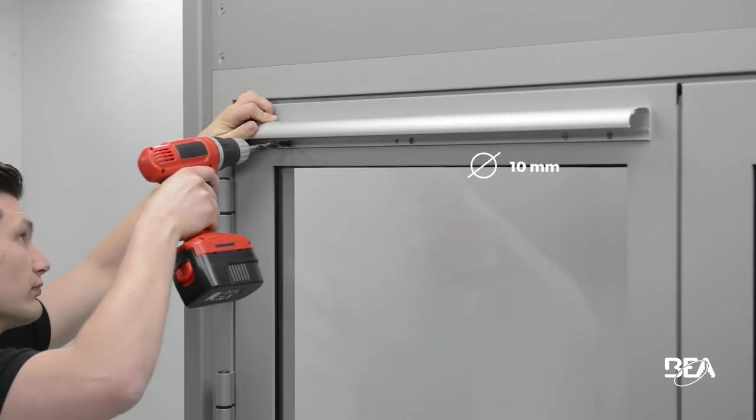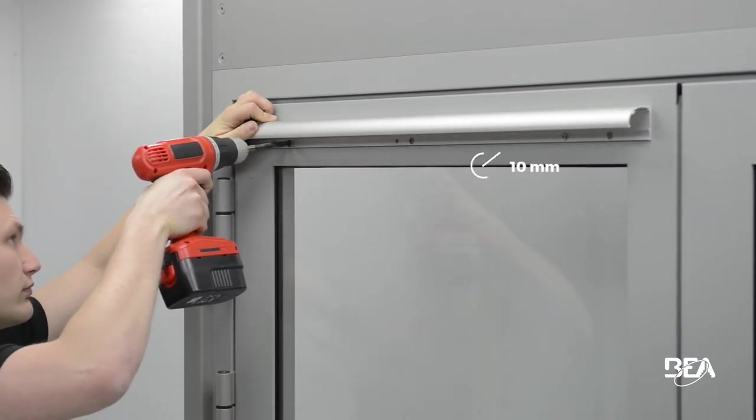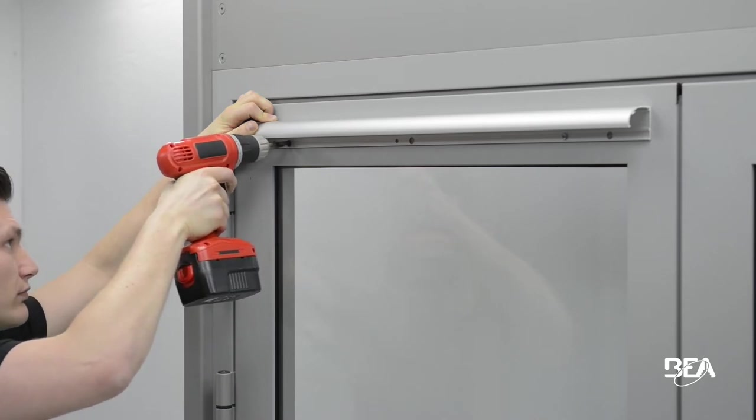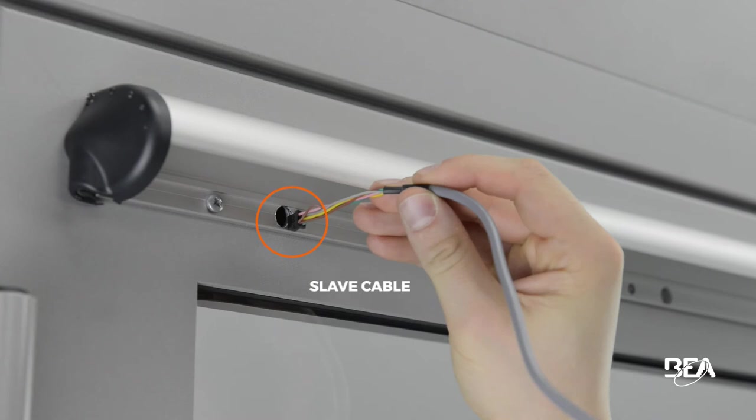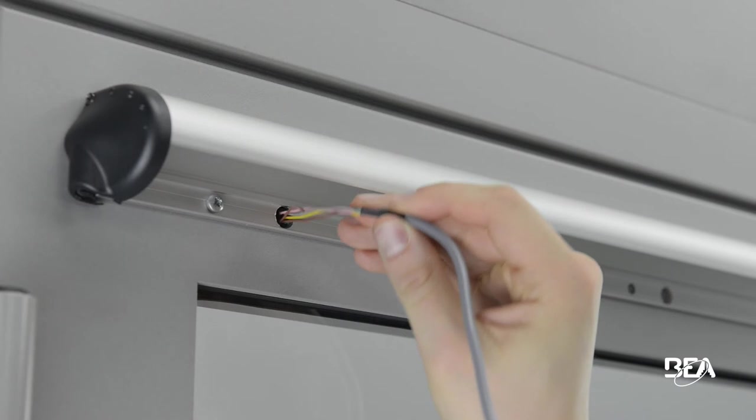Drill a hole through the door frame using a 10mm bit. Take the slave cable with the black plug and pass it through the hole to the other side of the door.